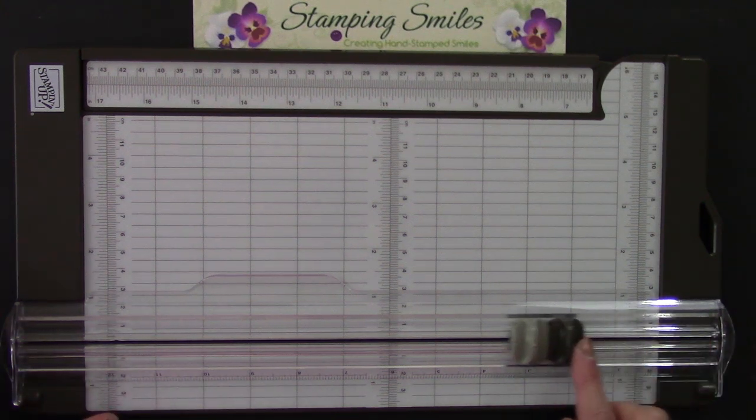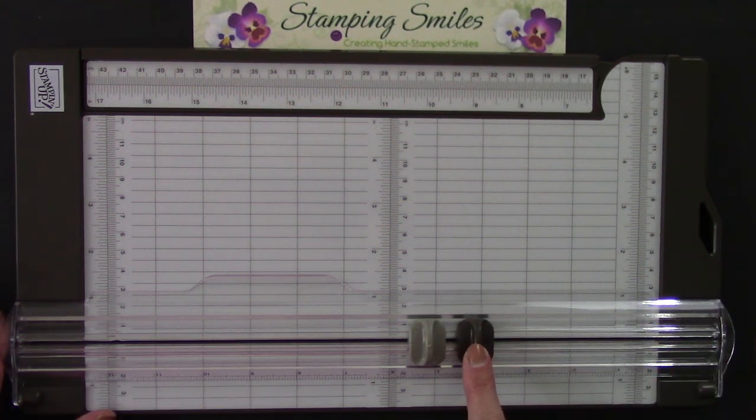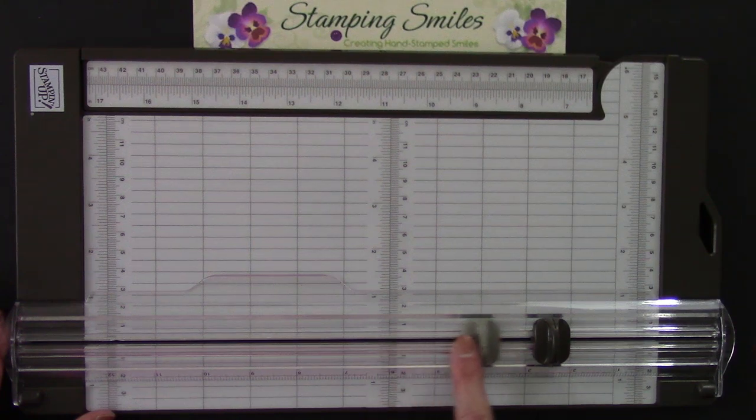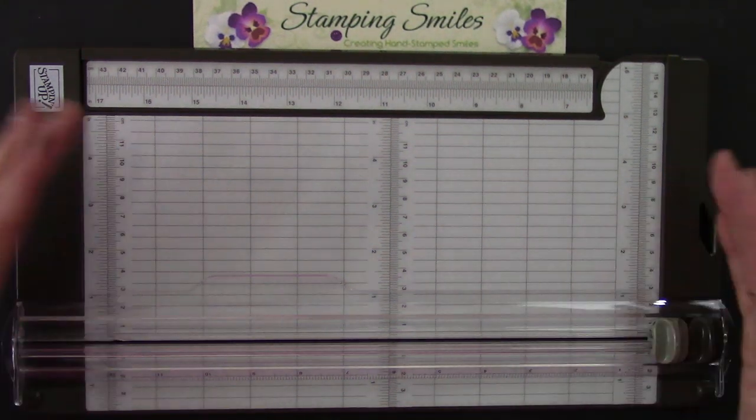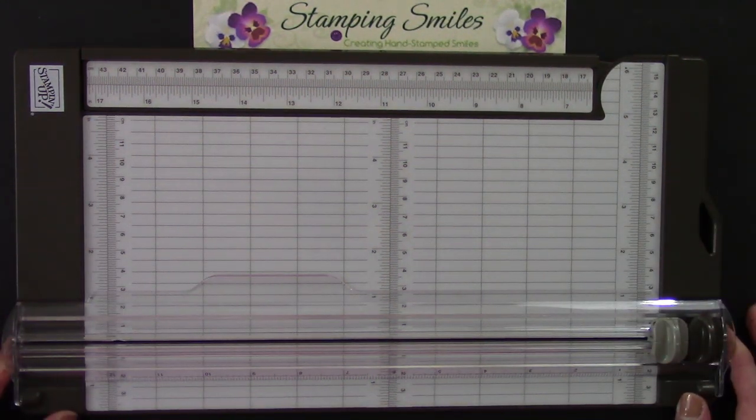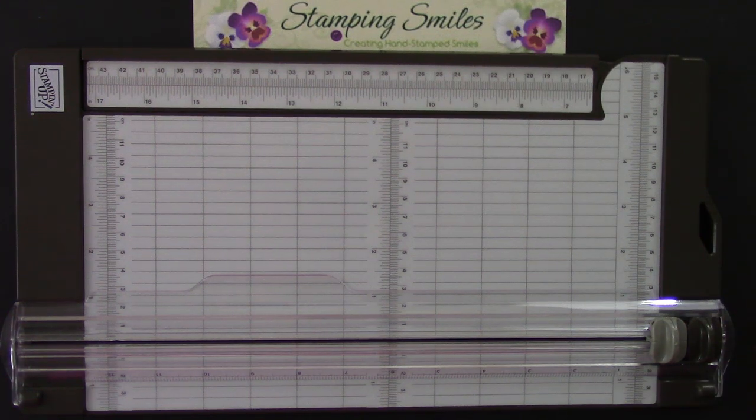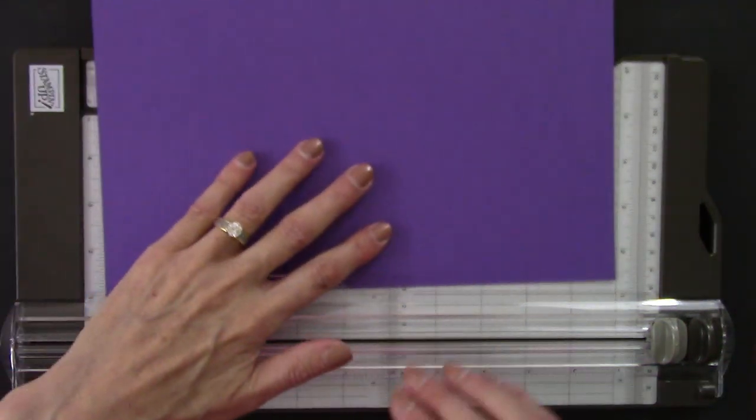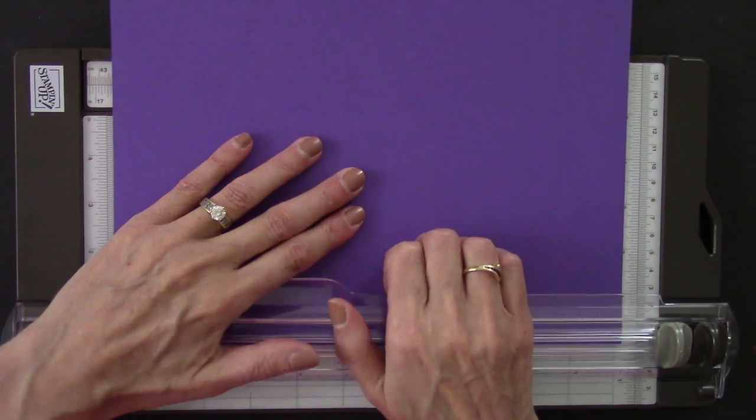But first I want to show you, it comes with two blades, the dark gray is the cutting, and the lighter gray is the scoring. And look at the length of this cutting track. It is so long you can easily put in your cardstock or paper. Here we go.